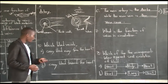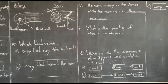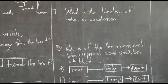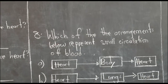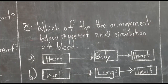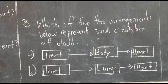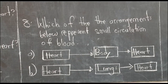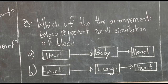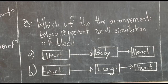Number eight asks: which of the arrangements below represent small circulation of blood? We learned about blood circulation — the movement of blood in the body. There are two types of blood circulation: small circulation and big circulation.